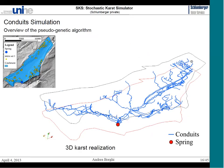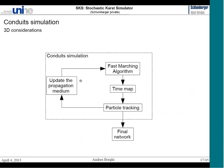A karst realization looks like this — shown here for the Noireg example, which I will describe in more detail shortly. This is the kind of realization you can obtain with this algorithm, also in 3D. In 3D, a couple of considerations must be taken into account.